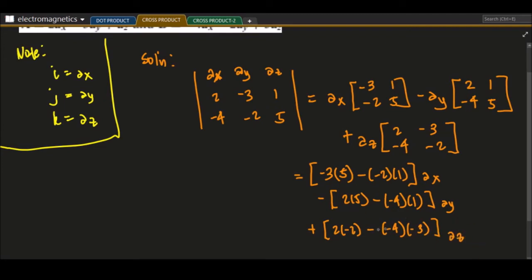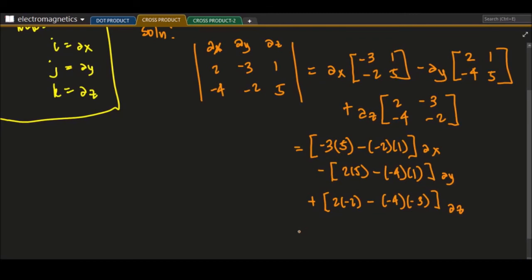We now have these vectors. We just simplify this one. So we have negative 15 plus 2, negative times negative times 1, so that is plus 2, a sub x.